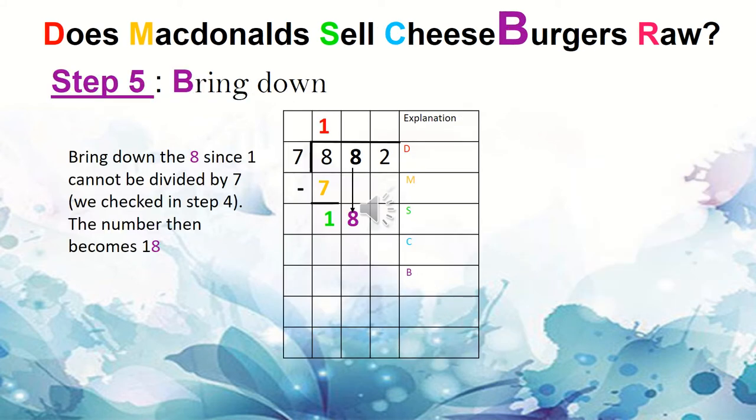Now we move on to step 5. Bring down. Now remember, when we checked, 7 could not go into 1. Because it cannot go into 1, I bring down my next number, which is 8. And I now form the number 18. Now we ask ourselves, can 7 go into the number 18? Yes, most probably. Because 18 is much bigger and 7 is smaller. So that is the reason we bring down.